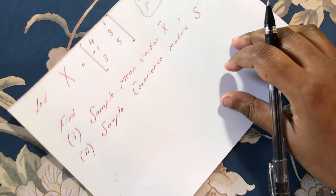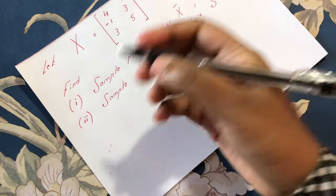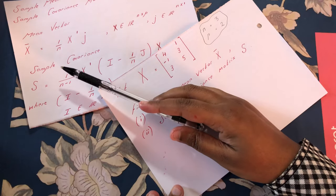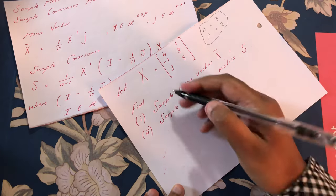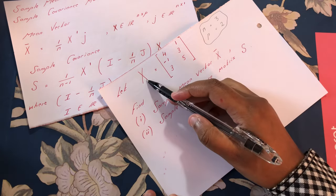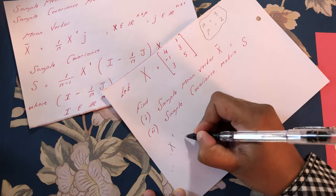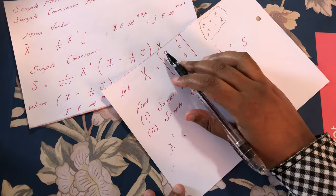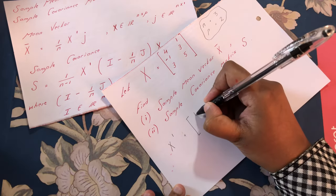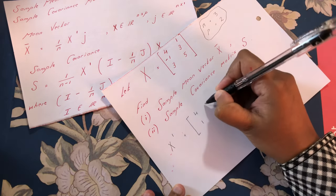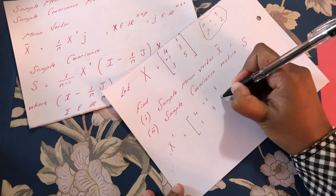Next, let's see how we find the sample mean vector. To find x-bar, we need X-dash, which is the transpose. From matrix X we can find X-dash, where the rows become the columns. So we have 4, 1, minus 1, 3, 3, 5.